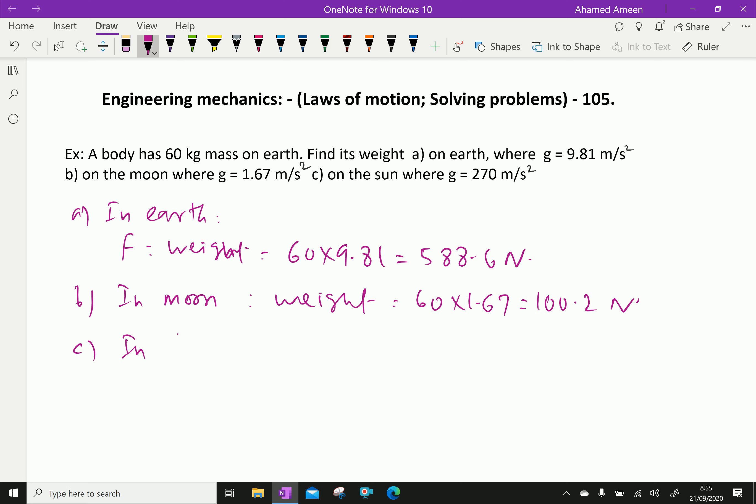On the sun: weight of the body equals 60, the mass, into 270 which equals 16,200 Newton.